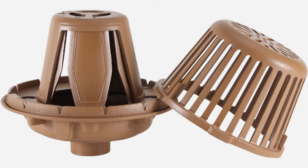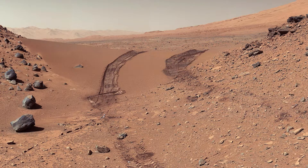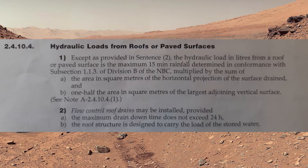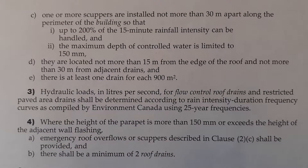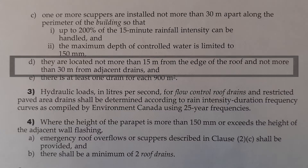All the examples we're going to go through are going to be flat roofs with flow control roof drains. In the plumbing code, clause 24104 talks about flow control roof drains and scuppers. I will leave that up to you to read through, but I want to point out one important clause about the location of flow control roof drains, and that is 24104-2-D.